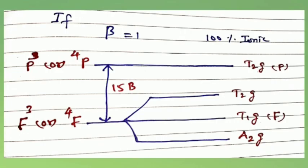If the nephelauxetic ratio is equal to 1, the percentage of ionic character is 100%. If the β value decreases, covalent character increases. The energy difference between a free ion in ground state, that is F term, and excited state P term of the same spin multiplicity is 15B.